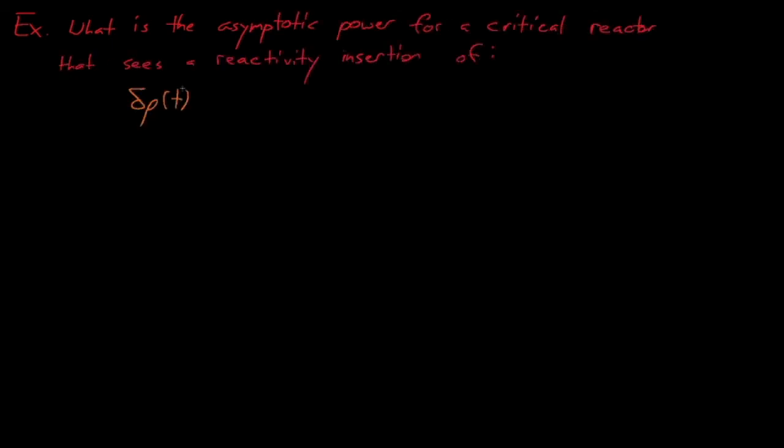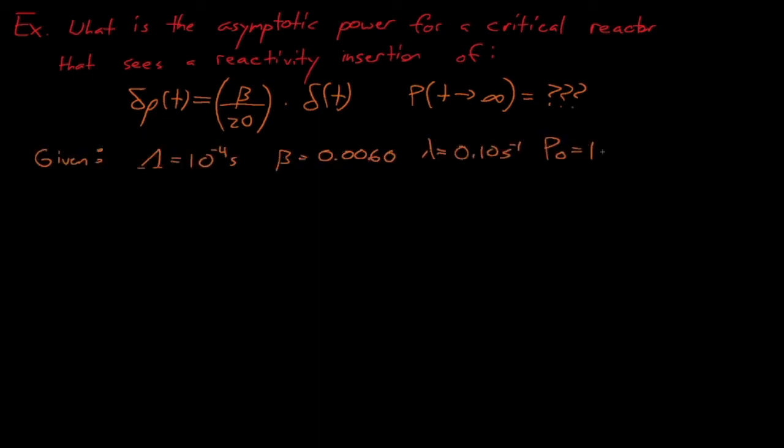Now let's work some example problems with the reactor transfer function. We'll assume that we have a critical reactor with no feedback that sees a reactivity insertion that's described by this five cent delta function. Our goal is to solve for the asymptotic power of the system, and we're given that lambda equals 10 to the negative 4 seconds, beta equals 0.0060, little lambda equals 0.1 inverse seconds, and that the initial power of the reactor generator is 10 to the eighth watts.